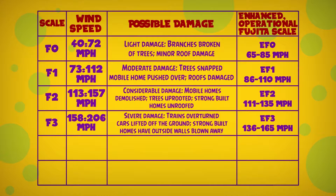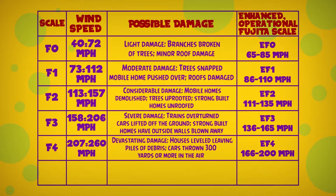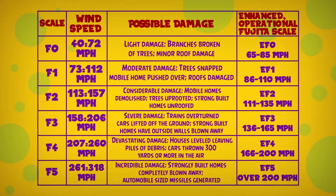F3: 158 to 206 miles per hour — severe damage, trees overturned, cars lifted off the ground, strong built homes have outside walls blown away. F4: 207 to 260 miles per hour — devastating damage, houses leveled, large piles of debris, cars thrown 300 yards or more into the air.